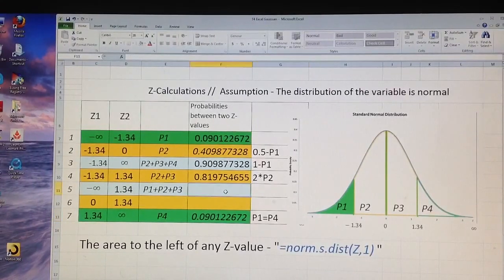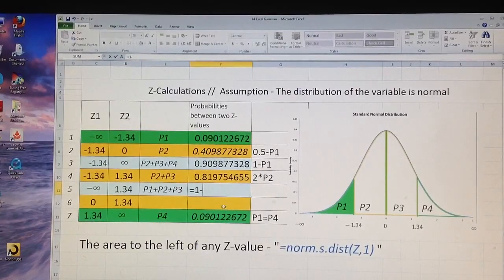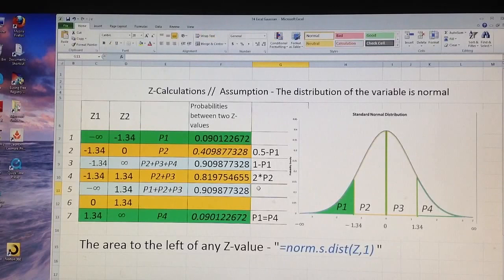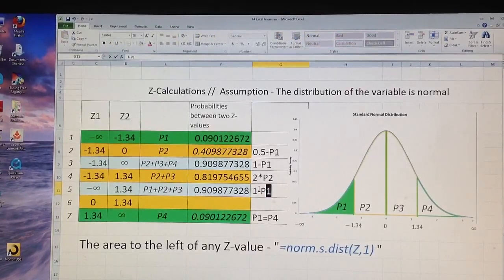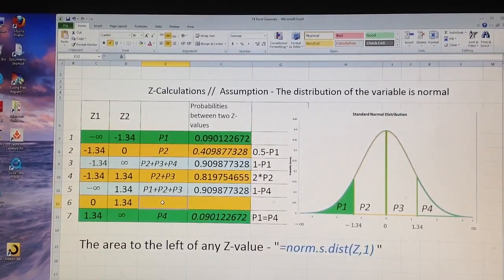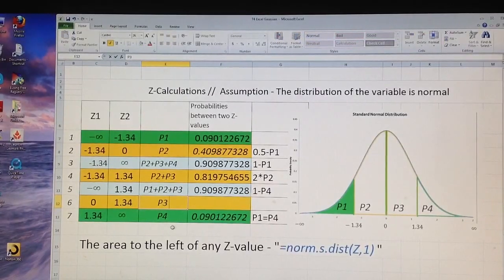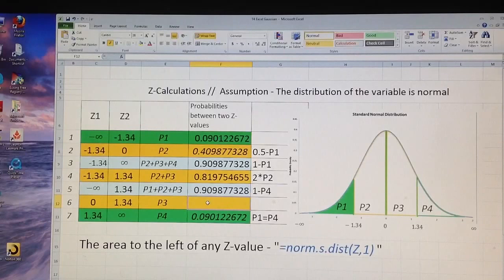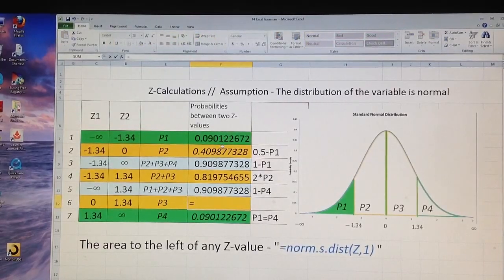And now I can calculate this area. It is equal to 1 minus P4, but I have P4 in here. So this is equal to 1 minus P4. Finally, the area from 0 to positive 1.34. This is the area P3. And this area actually is equal to the P2. So I will put equal to the area P2.